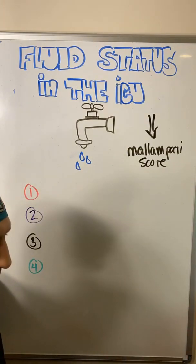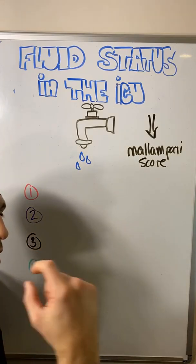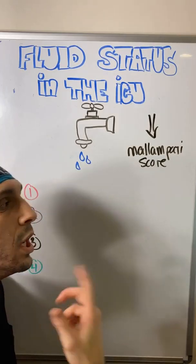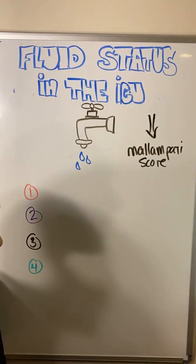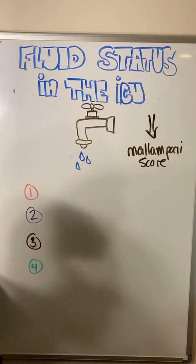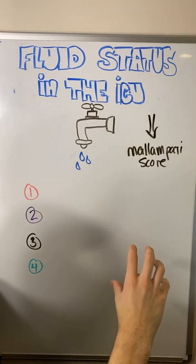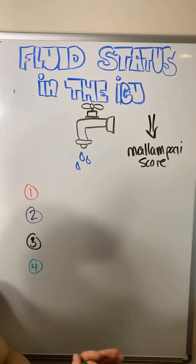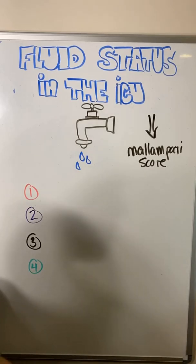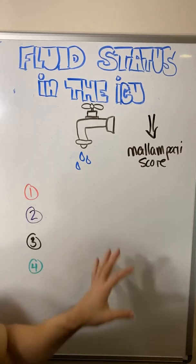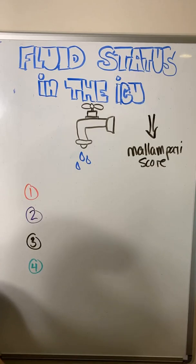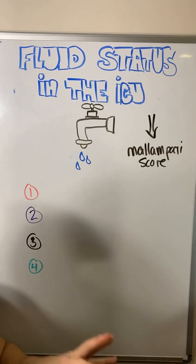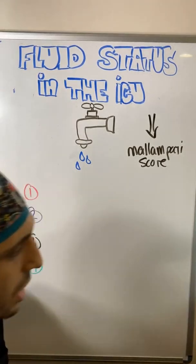We look at their incisor distance, the size of their mouth, their thyromental distance from chin to thyroid, and how far back their neck can move. Even if we're not consciously checking off boxes, we're thinking about each one and taking it as a composite of a larger picture — asking what do all these pieces tell us about what their airway and intubation might be like. We do the same thing when looking at fluid status in the ICU.